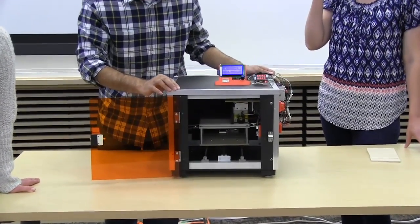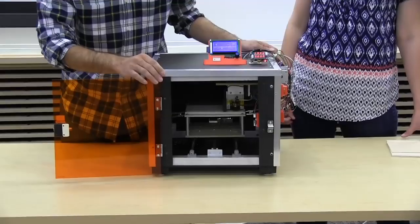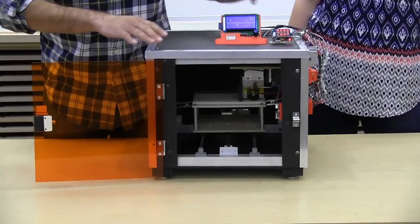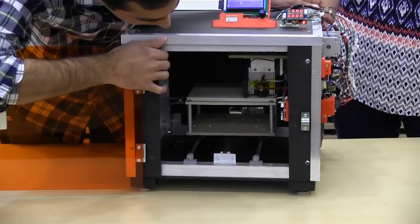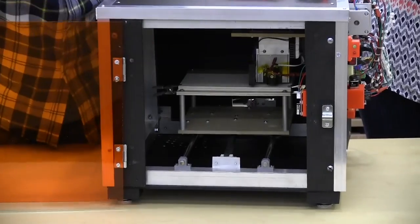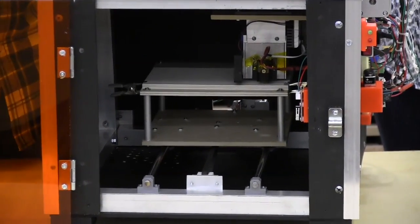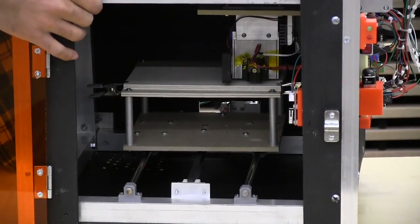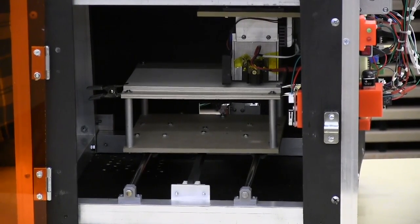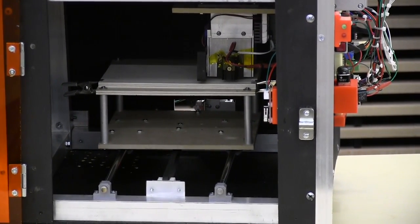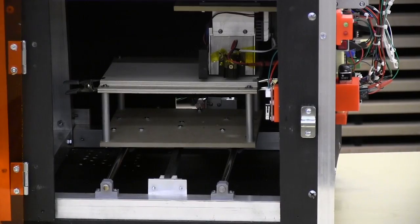To control the X and Y axis, there's two NEMA 17 motors that are driving two belts which control the planes. On the Y axis plane, you have the plate on which you put your material that you want to be etched onto. On the X axis, the actual laser setup with the heat sinks and the fans and the current regulator are all placed.